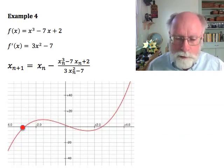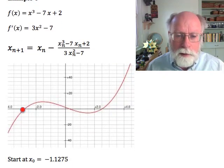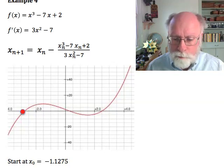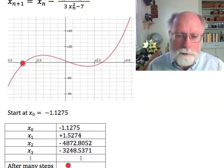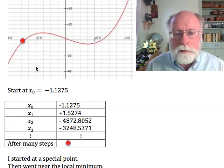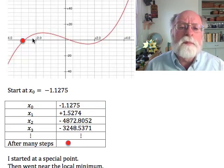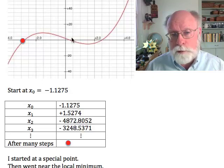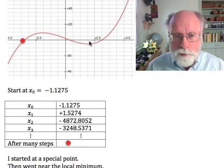If now I choose my starting point as x0 equals minus 1.1275, this is what happens. If you start at minus 1.1275, your first iteration following the tangent line will take you to the x-axis very close to this local minimum.